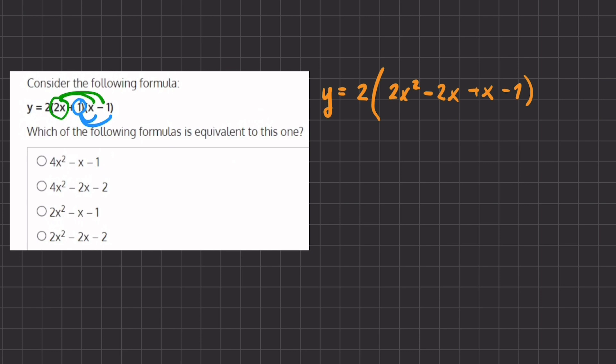Now if we combine like terms, we will rewrite our equation. We have y equals 2 times 2x squared minus 2x plus x minus 1.